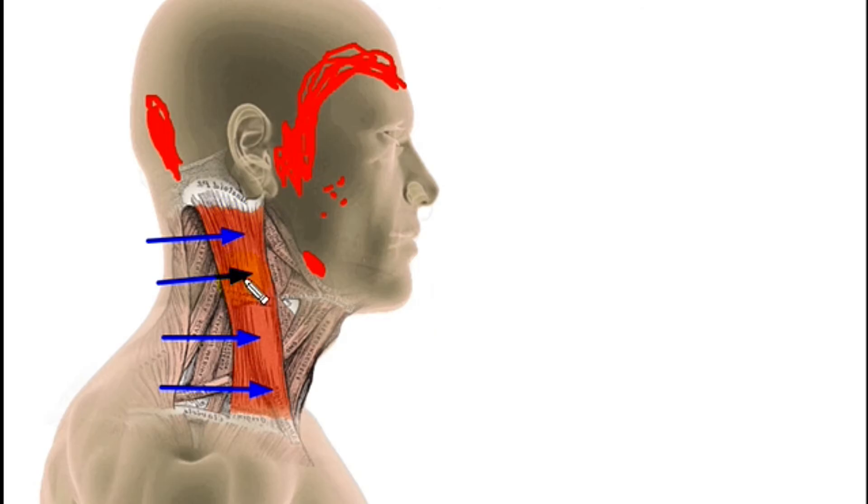So that's the distribution of the sternal division. This pain may masquerade as TMJ pain. The nature of the pain is usually a deep ache but sometimes you have a stabbing component to it and so it may mimic the pain of trigeminal neuralgia.